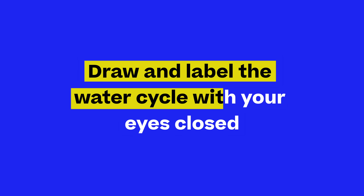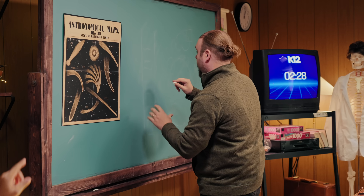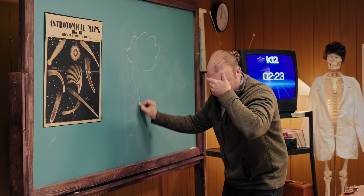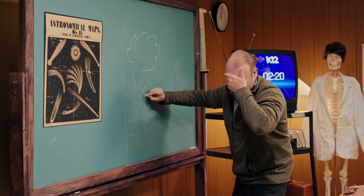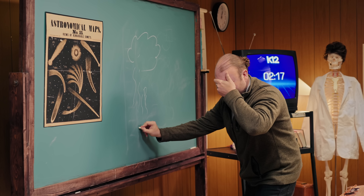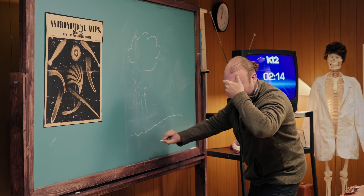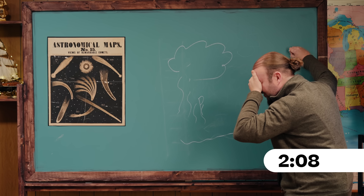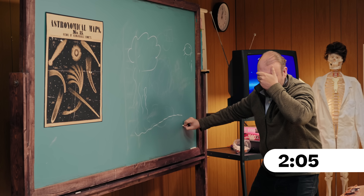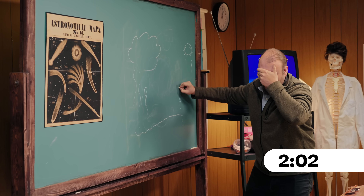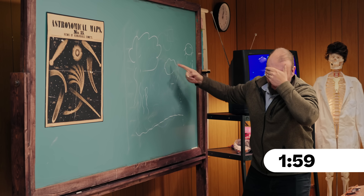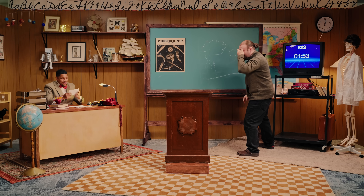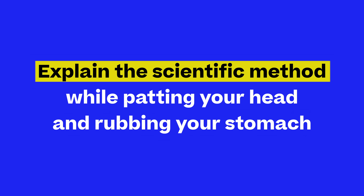Draw and label the water cycle on the chalkboard. But with your eyes closed. Close your eyes. This is precipitation. I'm going to put a P there. So then it's going to be in the reservoirs here. We're going to have an ocean. We're going to have a sun somewhere that's going to be evaporating this. So we've got the sun, water evaporating out of the reservoirs and condensing into clouds in the atmosphere. And if my calculations are correct, there should be some precipitation over on this side. Beautiful. And I love the artwork.